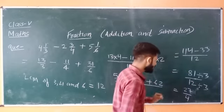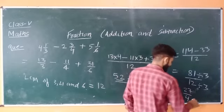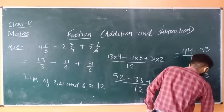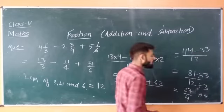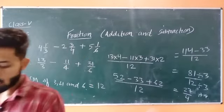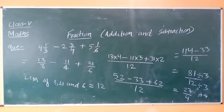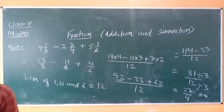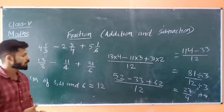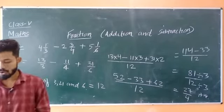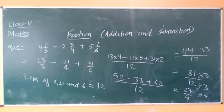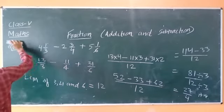So the answer is 27 upon 4, and you can also convert this into a mixed fraction. I hope this type of question is clear to everyone. You only need to convert the mixed fractions into improper fractions, then find the LCM of all the denominators, and the further procedure you already know because we discussed such questions in our previous videos.